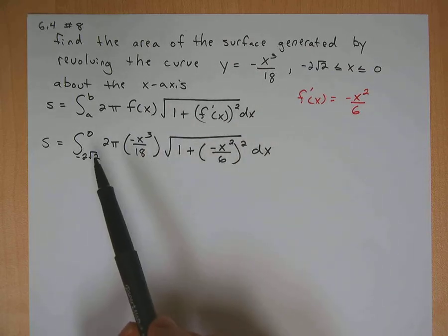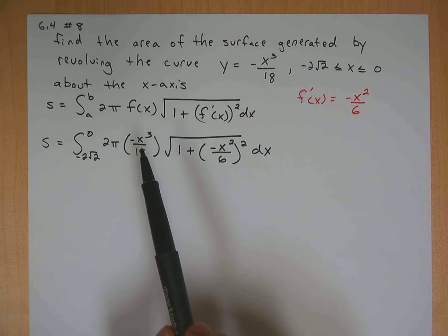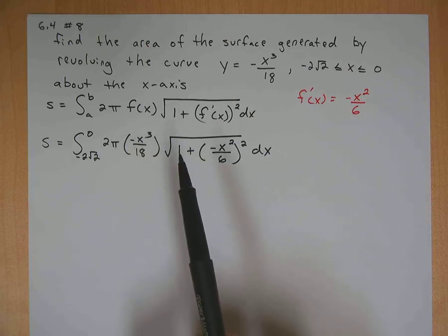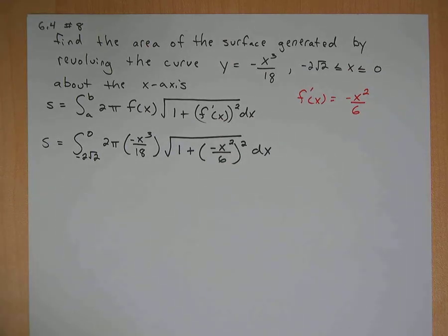Okay, and I have plugged in my limits, lower limit, upper limit, 2 pi. There's the function, square root of 1 plus the derivative squared. Okay, so let's work this thing out.